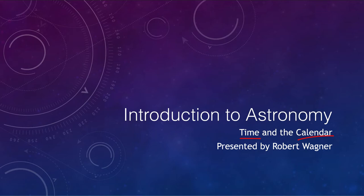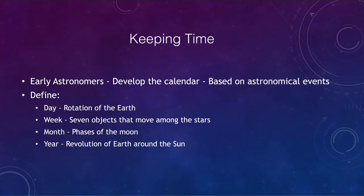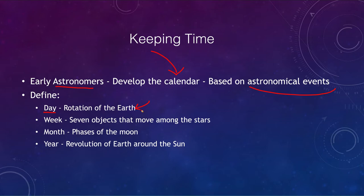There are a number of different ways of measuring time, and the early astronomers used these to develop the calendar. The calendar was all based on astronomical events. For example, our day is based on the rotation of the earth — how long it takes the earth to rotate once on its axis gives us our day.